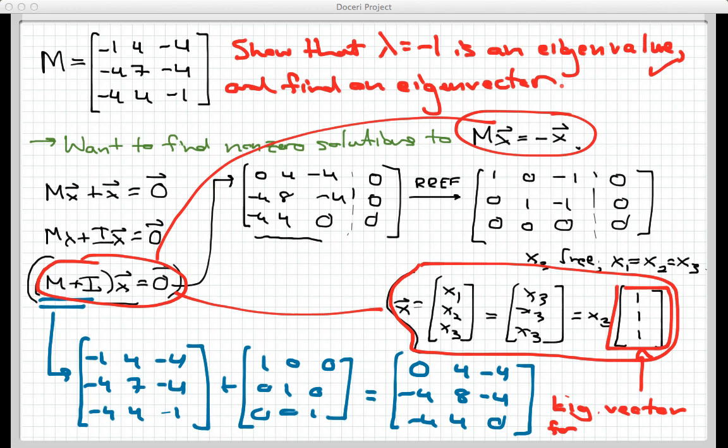It's an eigenvector for lambda equals negative 1. And you can check this by just going back through and multiplying 1, 1, 1 by M, the very original matrix, and you'll see that you end up getting negative 1, negative 1, negative 1.